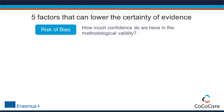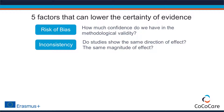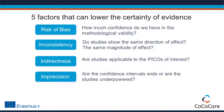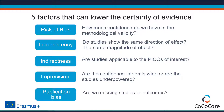The five factors that can lower confidence in evidence are: Risk of bias — how much confidence do we have in the methodological validity of the studies? Inconsistency — do studies show the same direction and magnitude of effect? Indirectness — are studies applicable to our population of interest, and do they use the interventions, comparators, and outcomes that we are interested in? Imprecision — are the confidence intervals wide, or are the studies underpowered? And publication bias — are we missing any studies or outcomes because they were never published?